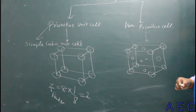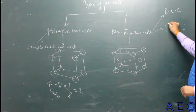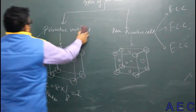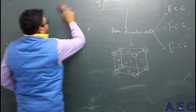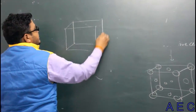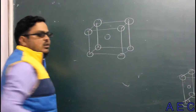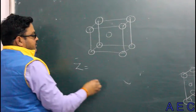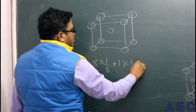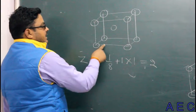Non-primitive unit cell is classified into 3 categories: first is body-centered cubic unit cell (BCC), second is face-centered cubic unit cell (FCC), and third is end-centered cubic unit cell (ECC). For BCC, Z equal to 8 corners into 1/8 plus one body center into 1, which gives total number of atoms equal to 2. So Z rank number value is 2. It is called non-primitive because atoms are present on corners as well as on the body center.